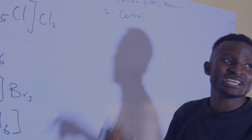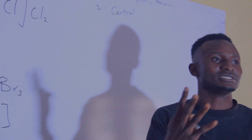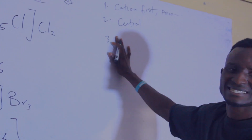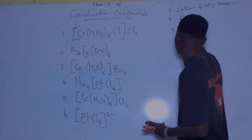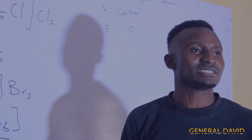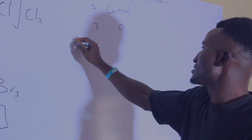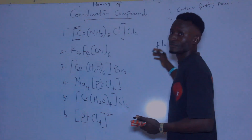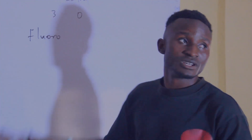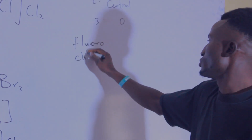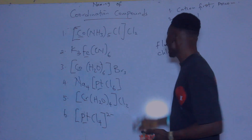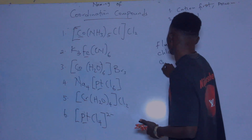The first thing is that whenever you have ligands, most of them end with -o. For instance, fluorine as a ligand will be fluoro. Chlorine as a ligand will be chloro. Cyanide as a ligand will be cyano.